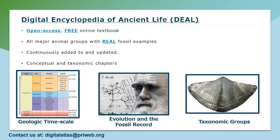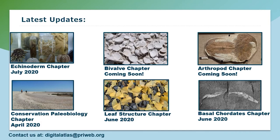The chapters are continuously added to and updated, so check back frequently for new editions. A few recent additions include an echinoderm chapter I co-wrote with Jansen Smith. Jansen also published chapters on conservation paleobiology and paleoecology. Liz Hermson recently published a chapter on leaf structure, part of a larger section on plant development and structure incorporating fossil plants. Later this fall we hope to publish two additional chapters — one on bivalves and one on arthropods — so be on the lookout for those.